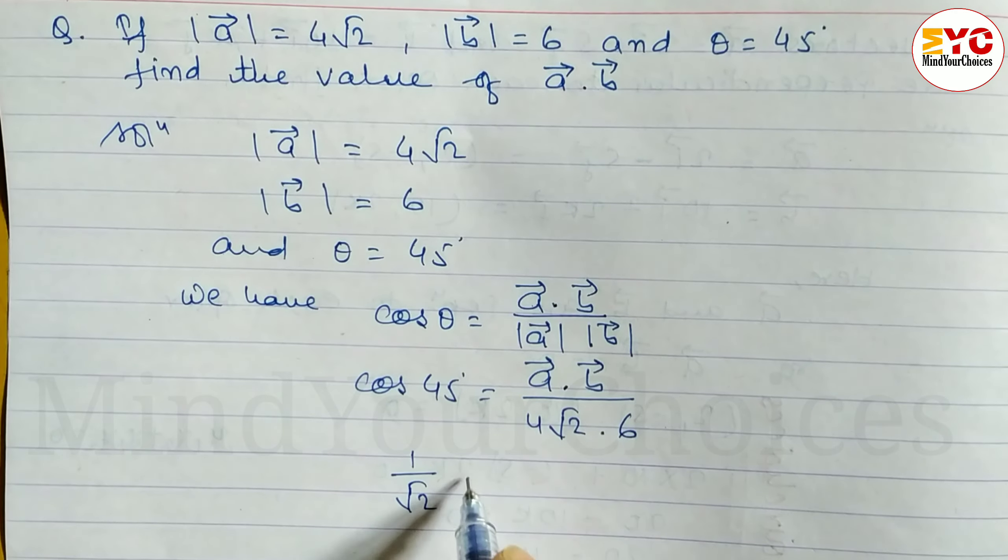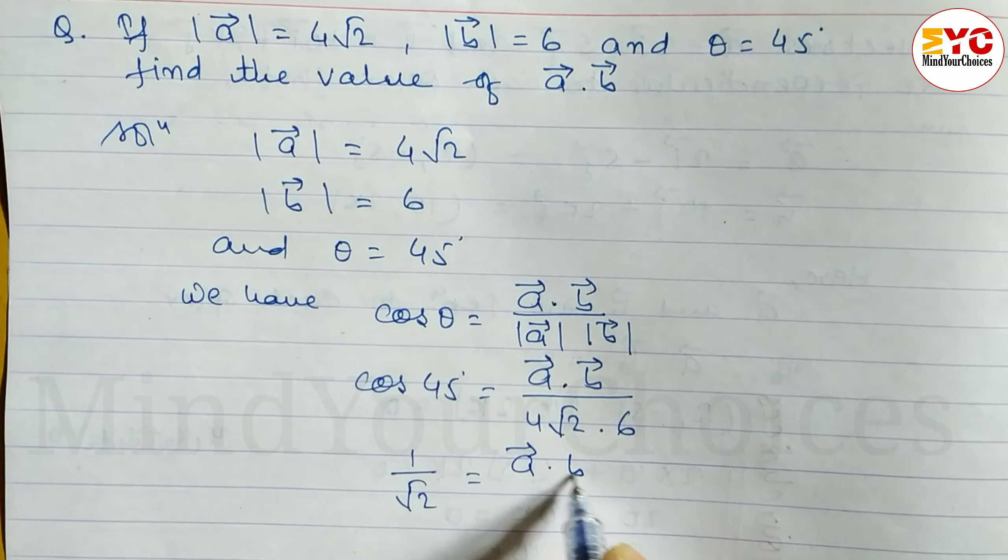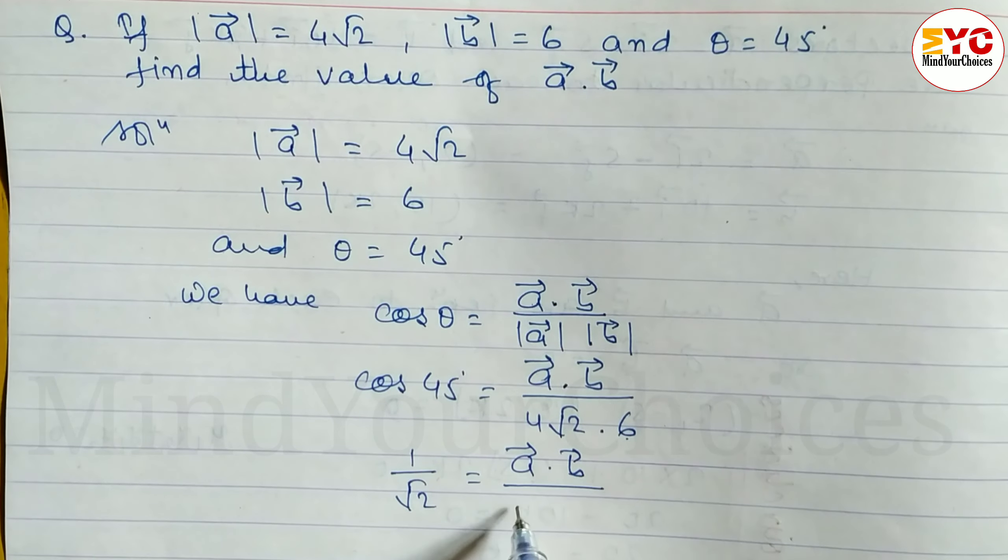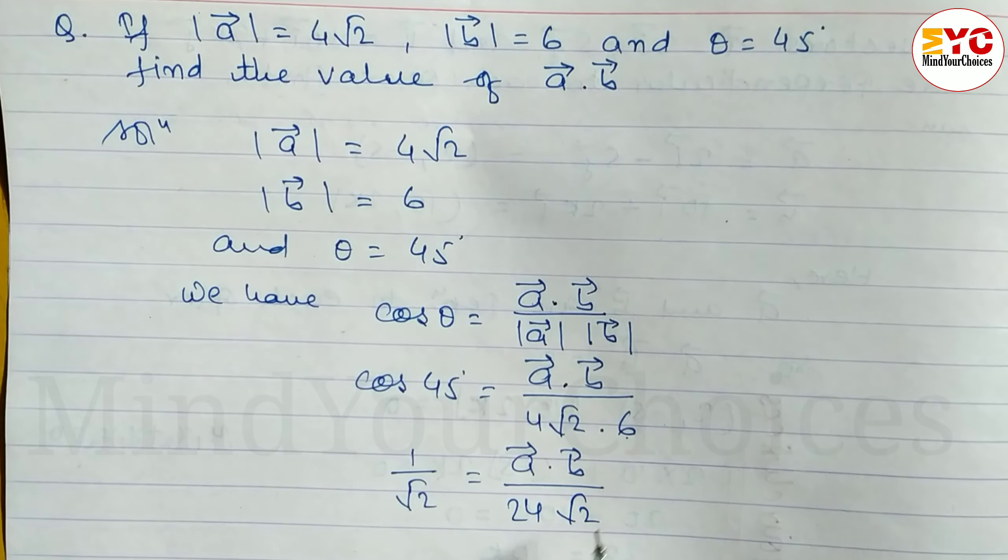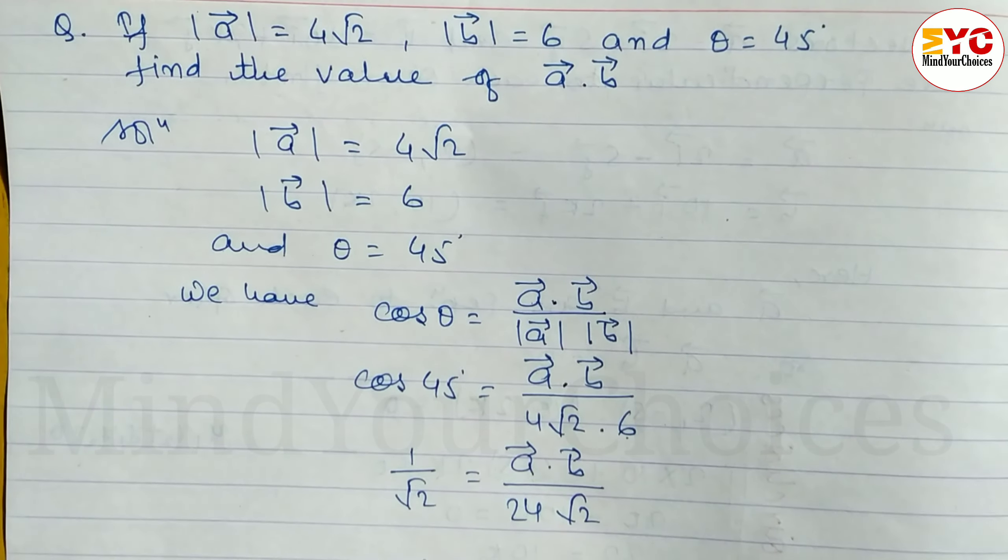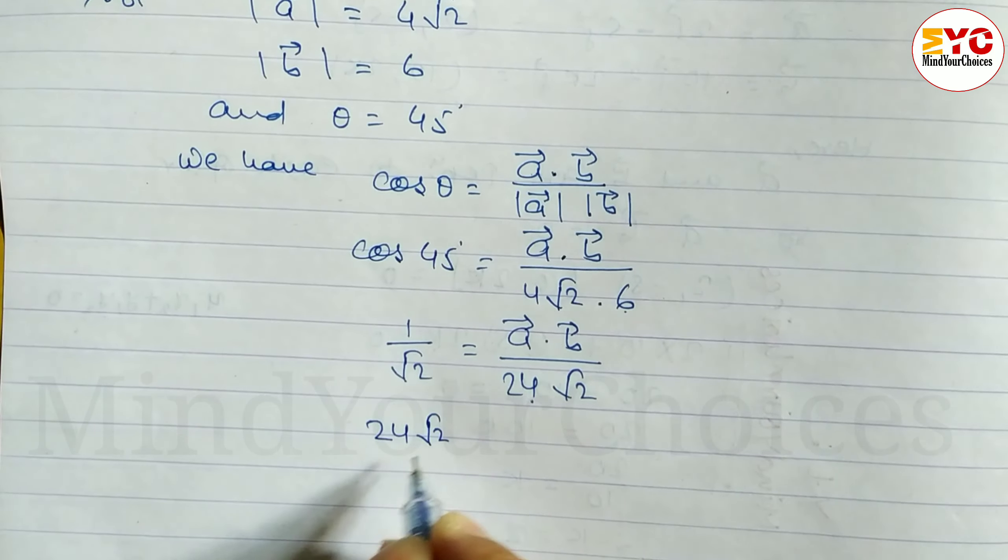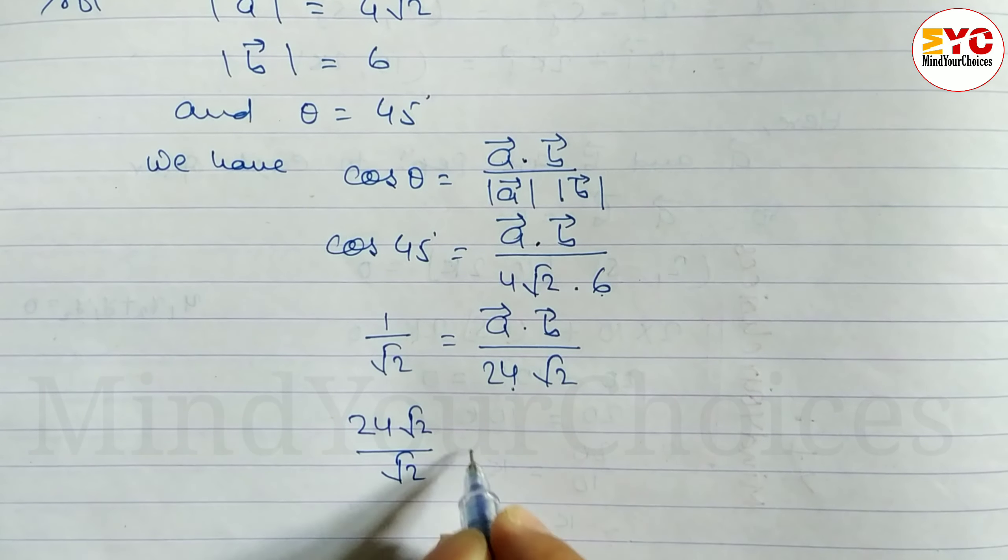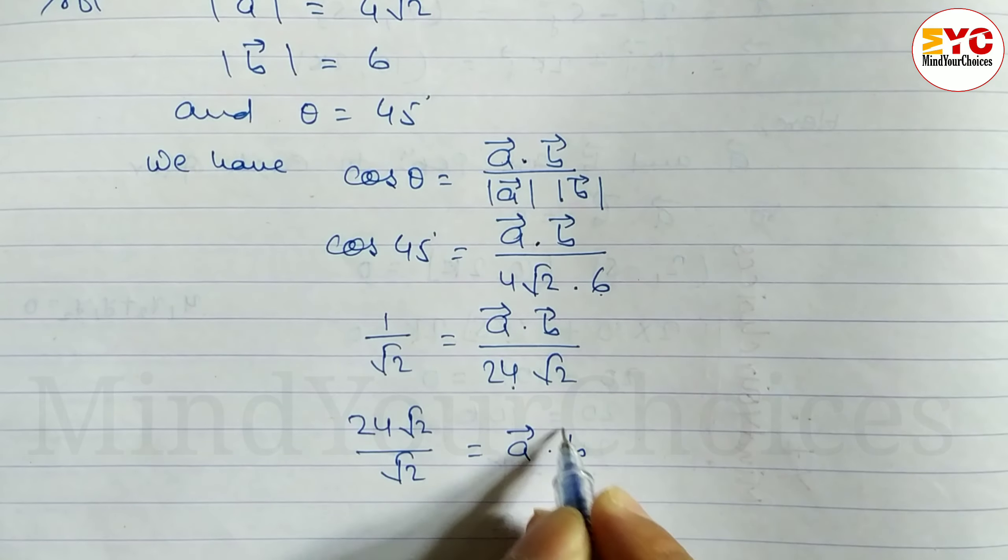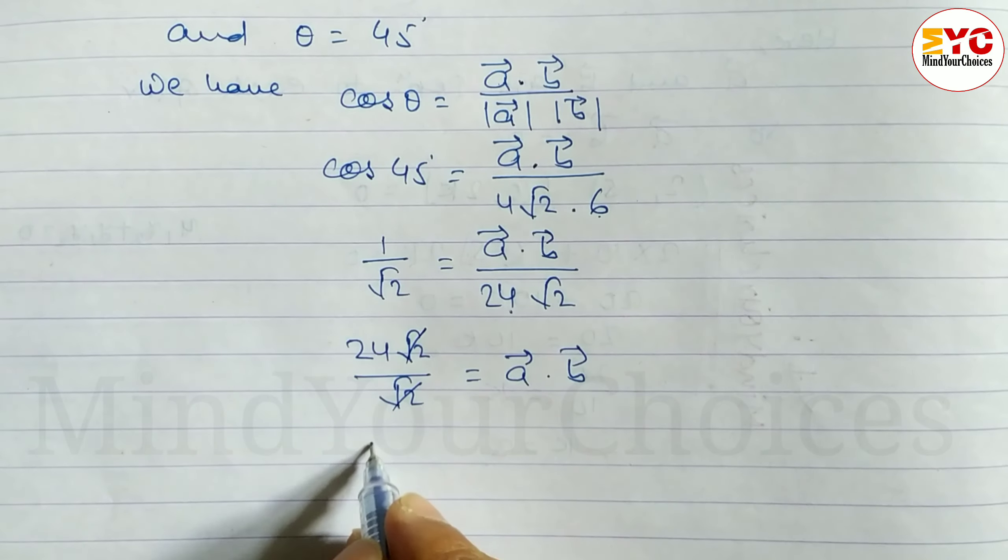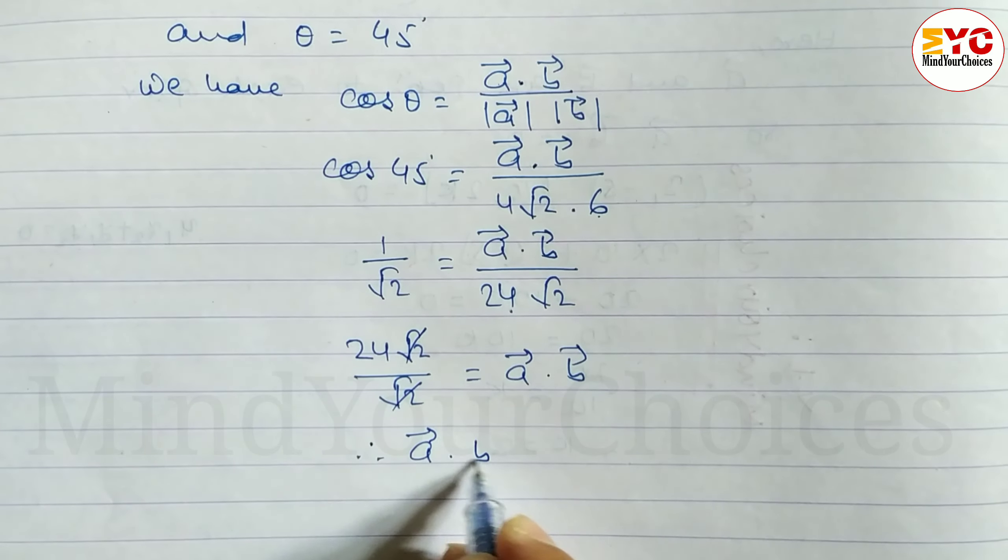Now cos 45 is equal to 1 by root 2, which equals a vector dot b vector. So we write 24 root 2. Cross multiply: 24 into 1 divided by root 2 equals a vector dot b vector. Root 2 cancels, therefore a vector dot b vector equals 24.